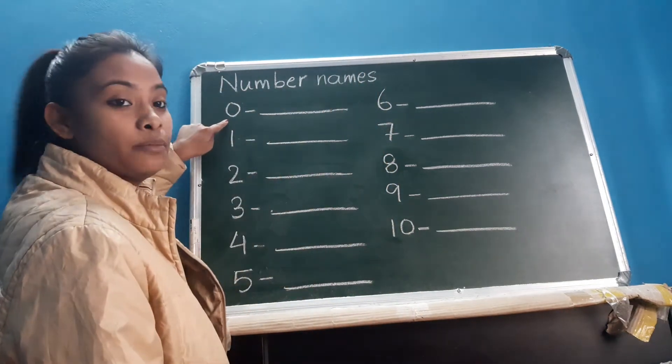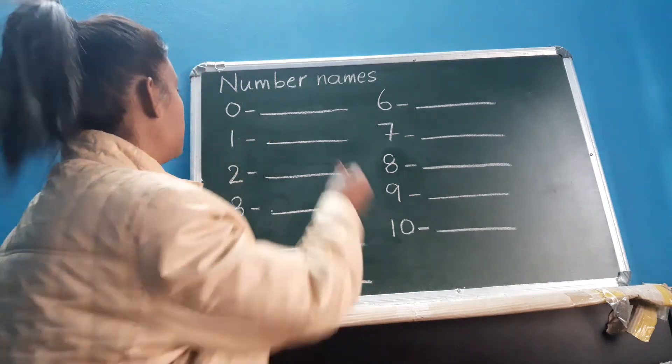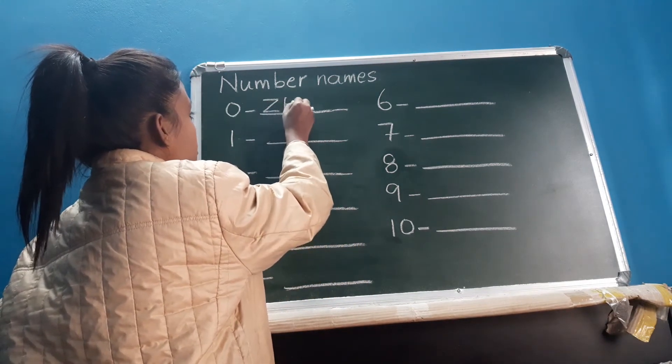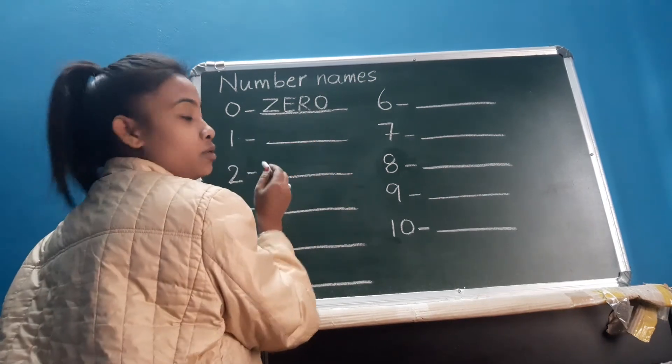So as you can see here this is number 0, yes? So you have to write the spelling of 0: Z, E, R, O. Zero, okay?